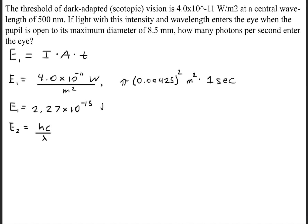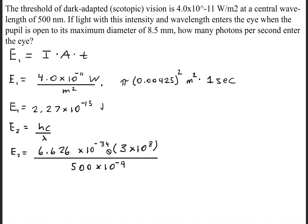Next, we'll find the energy of the photon. Recall that to find the energy of the photon, we use Planck's constant and we multiply it by the frequency. The frequency can also be rewritten as the speed of light divided by the wavelength. Planck's constant is 6.626 times 10 to the minus 34th joule-seconds, the speed of light in a vacuum is 3 times 10 to the eighth meters per second, and we're given that the wavelength is 500 nanometers, which we convert to standard units of meters. This gives us an energy of 3.98 times 10 to the negative 19th joules.